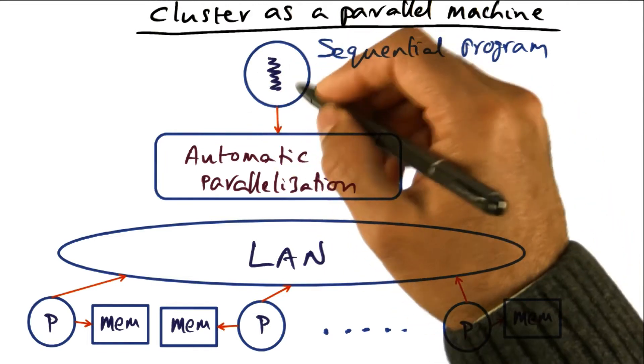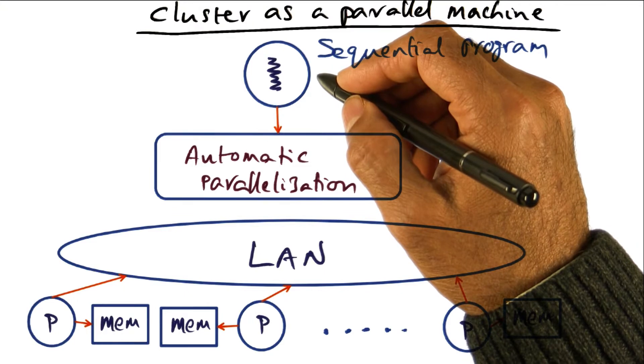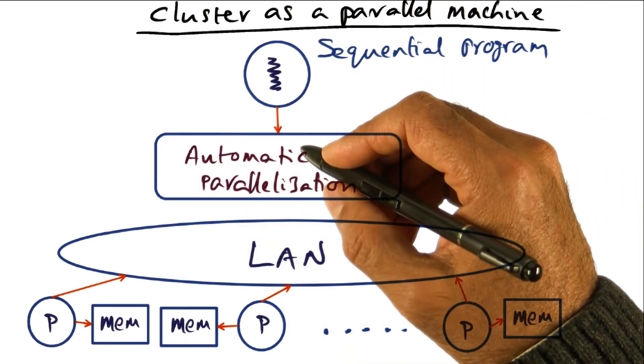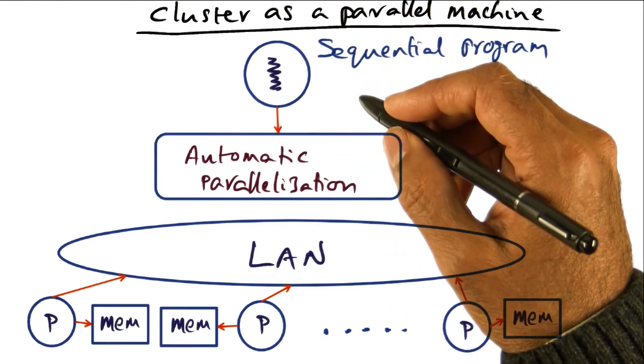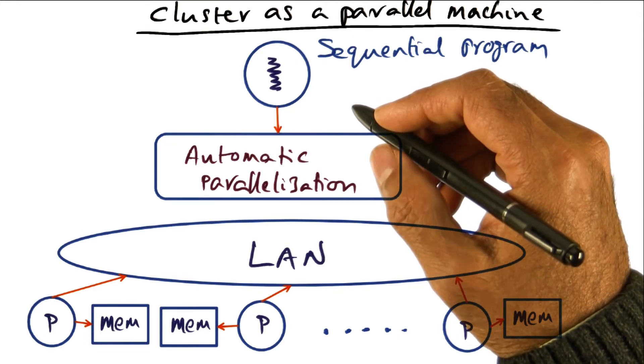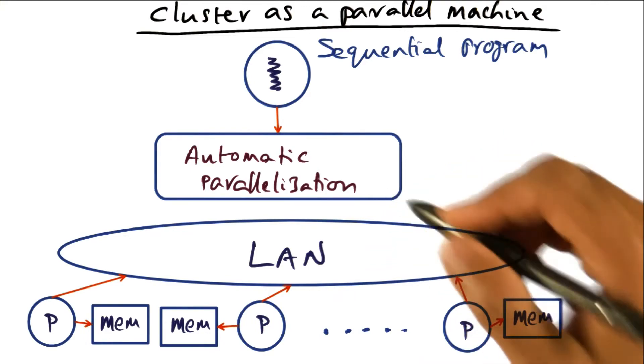The opportunities for parallelism exist, but the program itself is not written as a parallel program. And now it is the owners of the tool, in this case an automatic parallelizing compiler, to look at the sequential program and identify opportunities for parallelism and exploit that by using the resources that are available in the cluster.